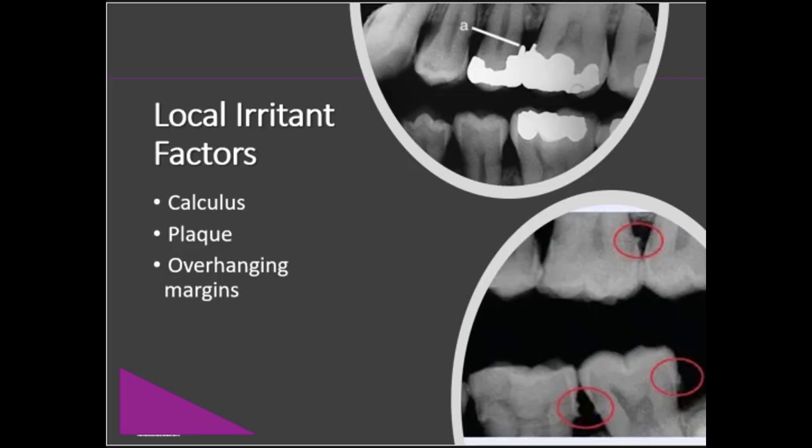We know that patients who present with active periodontitis often have subgingival calculus, but it's important to remember that calculus did not cause the periodontal disease. Calculus acts as a harborer of bacterial plaque, which then leads to an inflammatory immune response. So while calculus does not directly cause periodontitis, it does contribute to the disease process.